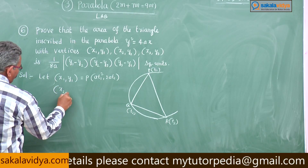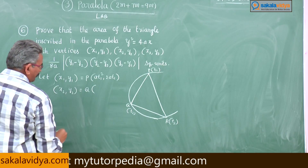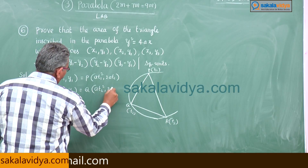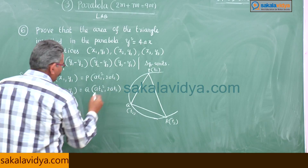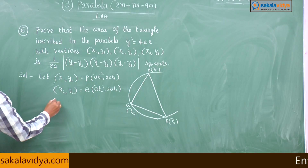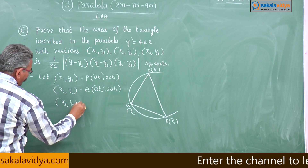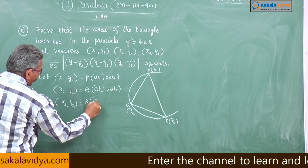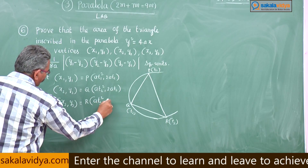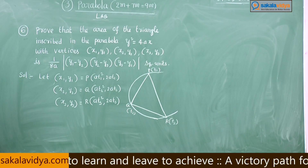x2, y2 is equal to Q of (at2², 2at2), and x3, y3 is equal to R of (at3², 2at3).